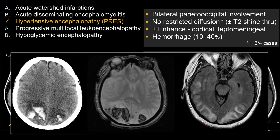This is another example of PRES. You can see a similar posterior asymmetric involvement of the posterior temporal lobe on FLAIR with cortical and subcortical involvement. What's different about this case is there is quite a bit of acute parenchymal hemorrhage, both on CT and on GRE MRI. Seeing hemorrhage should not dissuade you from diagnosing PRES if other imaging characteristics and the clinical picture fit — PRES can present with hemorrhage.